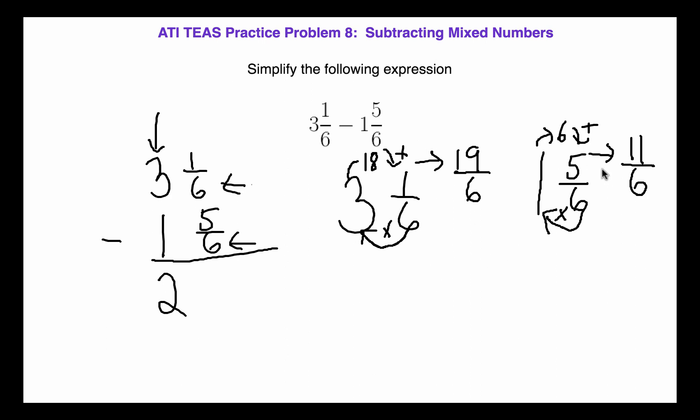Once we do that, we're going to take our two new fractions and we're going to put them right back in our subtraction problem. Now one thing you want to realize is that once you change your mixed numbers to improper fractions, you will no longer need these whole numbers, three and one.